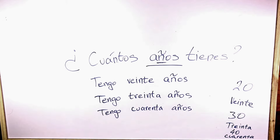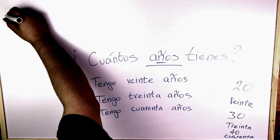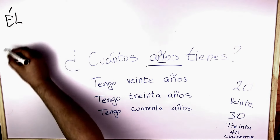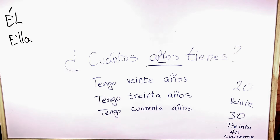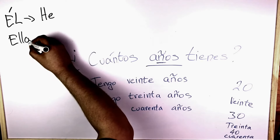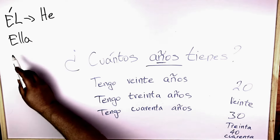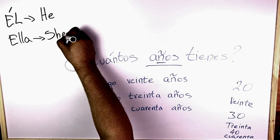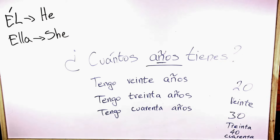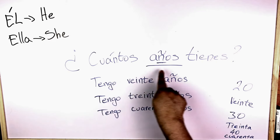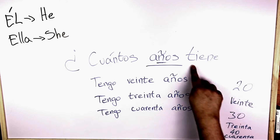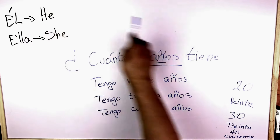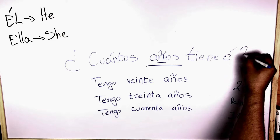Now, personal pronouns — very important too. Él, with a little accent on top of the E, and ella are two personal pronouns. Él means he, and ella — notice double L, sounds like a Y — ella means she. So if you want to ask your friend how old is, for example, a guy sitting in the corner of the room, you would ask: ¿Cuántos años tiene él?